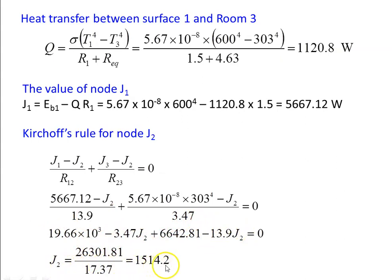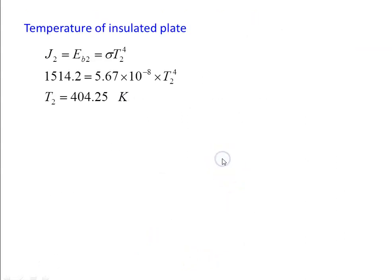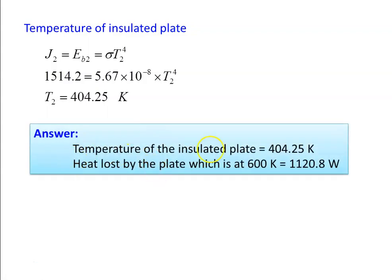Solving numerically, J2 equals 1514.2 watts per meter squared. For the temperature of the insulated plate: J2 equals Eb2 equals sigma times T2 to the power 4. So 1514.2 equals 5.67×10⁻⁸ times T2⁴, giving the temperature of the insulated plate equal to 404.25 Kelvin. The answers are: temperature of the insulated plate is 404.25 Kelvin, and the heat loss by the plate at 600 Kelvin equals 1120.8 watts per meter squared.